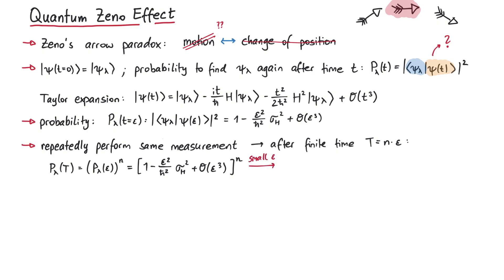Since epsilon is really small, we can approximate the power of n like this, which yields 1 minus epsilon t over h-bar squared times the variance of the energy.